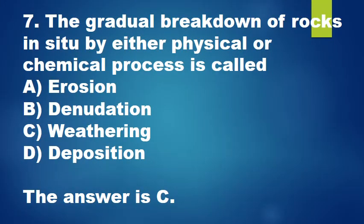Question 7: The gradual breakdown of rocks in situ by either physical or chemical process is called: A. Erosion, B. Denudation, C. Weathering, D. Deposition. The answer is C.